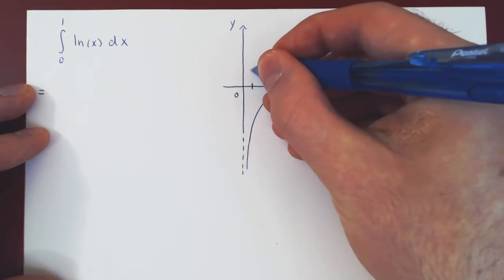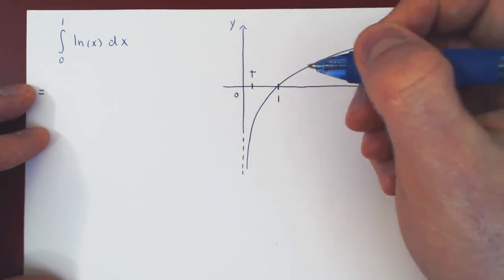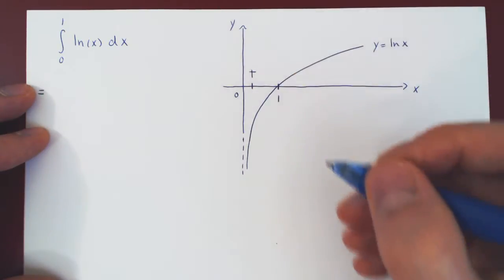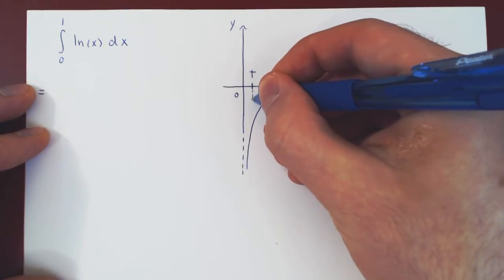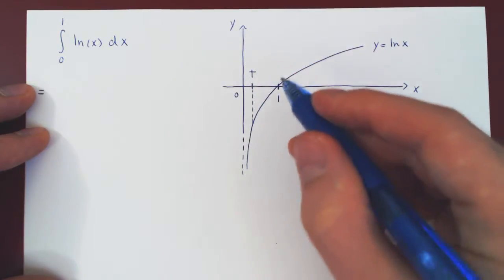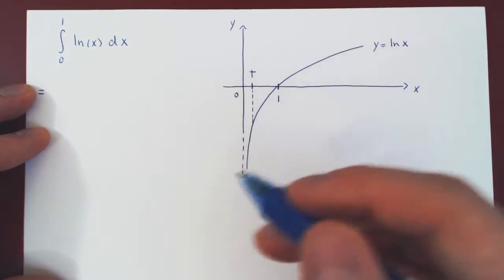So imagine that t is a slightly positive real number. And now you can of course integrate ln of x from t to 1.